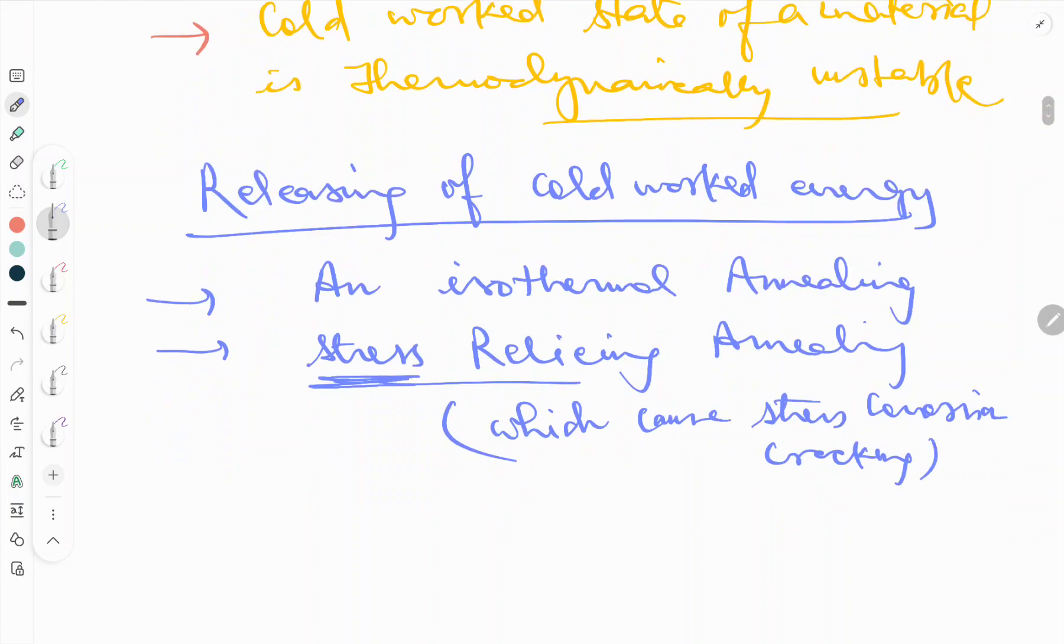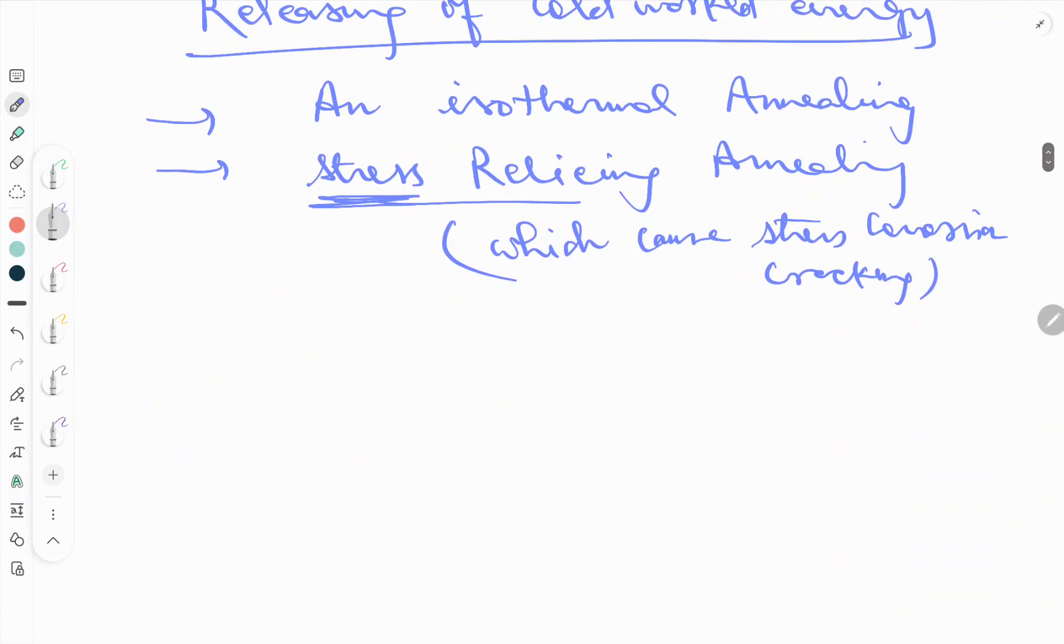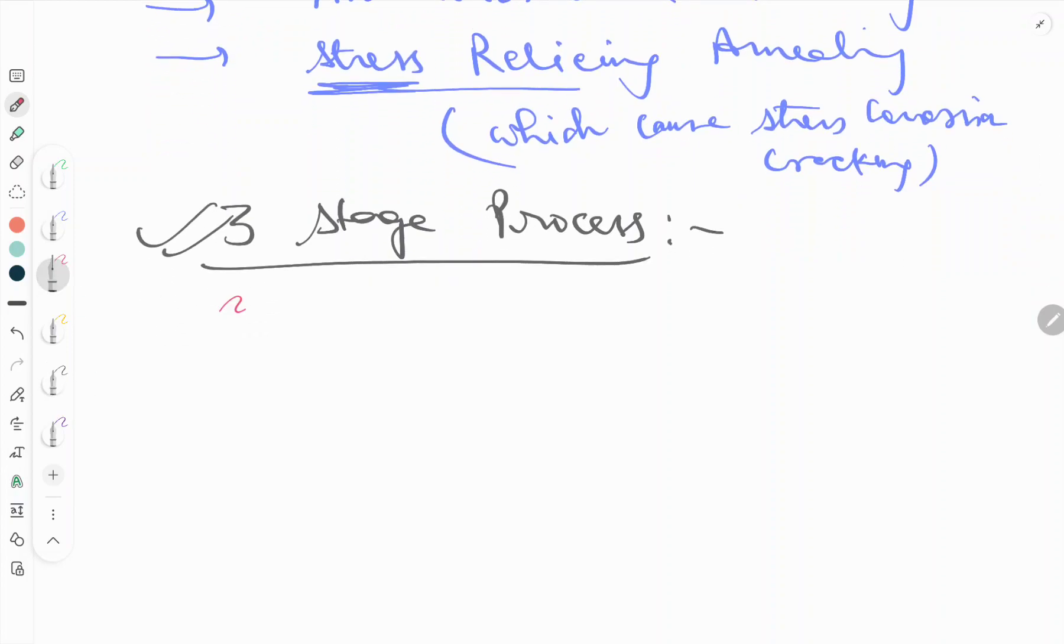There are three stages during annealing of this process. What are the three stages? Three stage process - annealing of cold worked material. The three stages in annealing of cold worked material are: first is recovery, second is recrystallization, and third is grain growth.